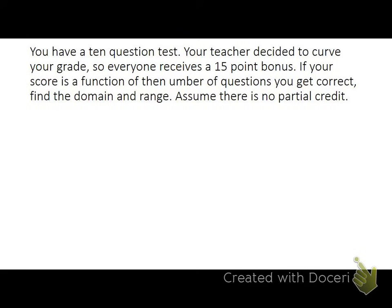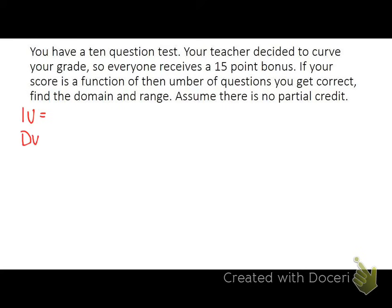A good thing to do in any situation where you're dealing with a function is to start by defining our variables. The two things we're comparing are the number of questions correct and your score. Our independent variable is the number of questions you get correct, and our dependent variable — what depends on the number you get correct — is your score.